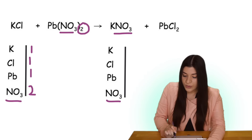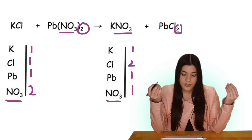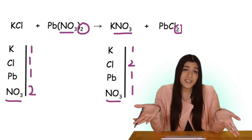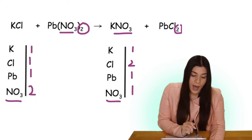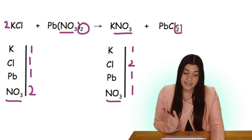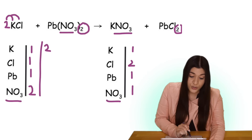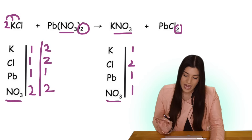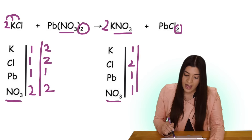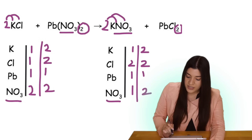Moving on to our products: there's only one potassium, two chlorines, one lead, and one nitrate. I'm going to start balancing with chlorine. Since on the product side there are two chlorines and on the reactant side only one, I'll place a two in front of KCl. This distributes, giving us two potassiums and two chlorines. Now I'll put a two in front of potassium nitrate on the reactants, giving us two potassiums and two nitrates.